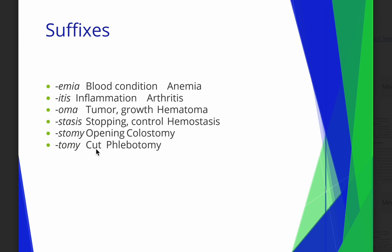-Otomy means a cut, and -ostomy is like an opening — for example, a colostomy is an opening for the intestines. Both relate to an opening or incision, but they are different. The S in -ostomy makes it different from -otomy, so pay attention to how different they are.